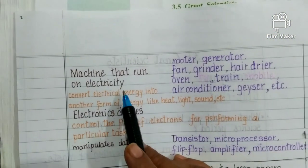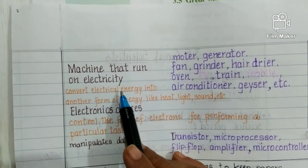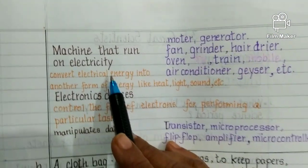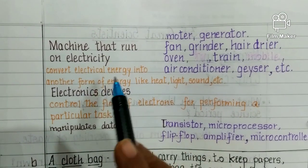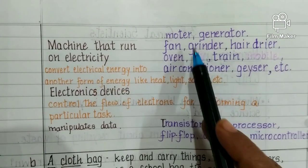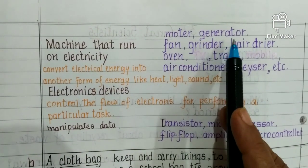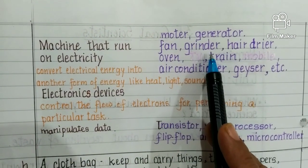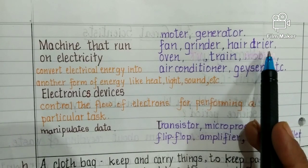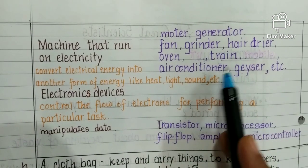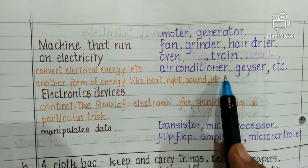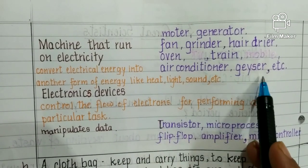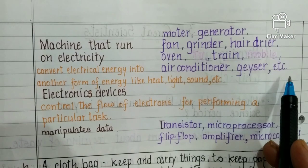The next category is machines that run on electricity. These include: motor, generator, fan, grinder, hair dryer, oven, train, air conditioner, geyser, etc.